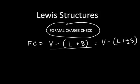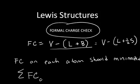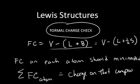The rule states that the formal charge on each atom should be minimized — that is, as close to zero as possible. And the sum of the formal charges on each atom in the structure should equal the charge on that compound. So if you have a neutral compound, the formal charges all have to add up to zero. But if you have a polyatomic anion or cation, the formal charges need to add up to be the charge on that particular ion.